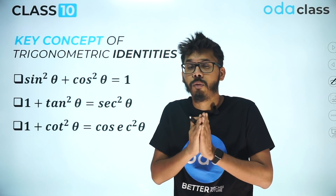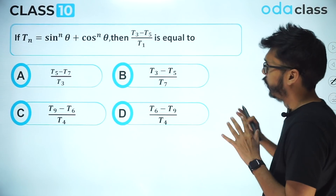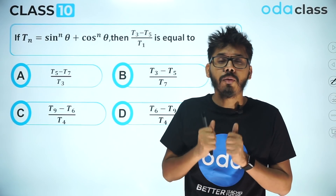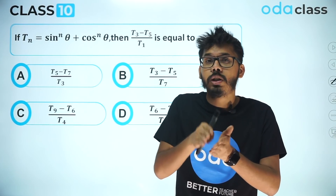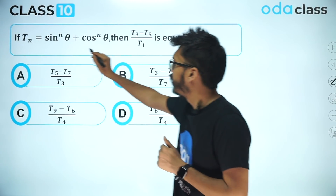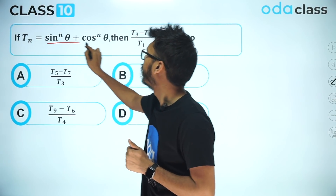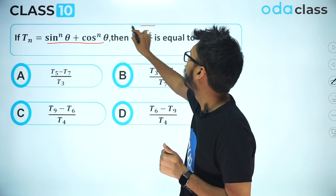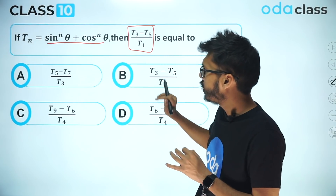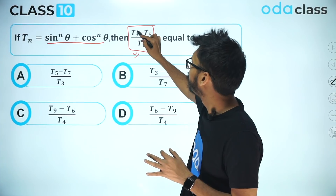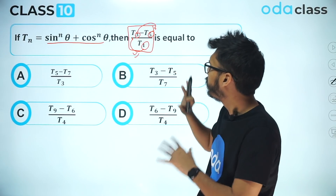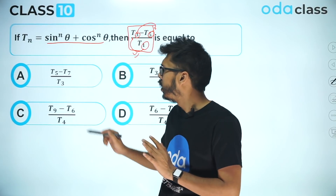The first question is a bit more difficult than usual — it is actually of olympiad level. Not just trigonometric functions are used here; a theory of recursion will also be used, which you study in 11th and 12th. The question says: if tₙ = sinⁿθ + cosⁿθ, then find the value of (t₃ − t₅) / t₁. Notice that 1, 3, and 5 differ by two, so something related to a difference of two will work here.